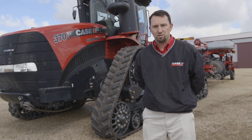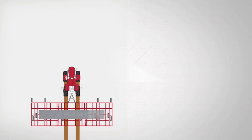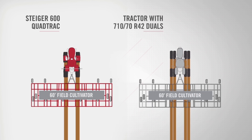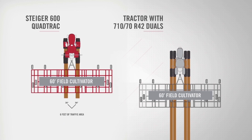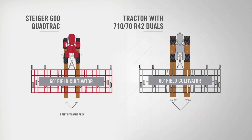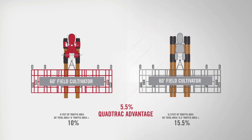We can do this a couple of ways: by eliminating passes across the field with wider equipment, or by using equipment that does more in a single pass. Let's compare the Steiger 600 QuadTrack pulling a 60-foot field cultivator to a wheel tractor with 710-70R42 duals, also pulling a 60-foot field cultivator. The tracked area for the QuadTrack with 36-inch belts equals a total of 6 feet because there are two tracked rows. The traffic area for the wheel tractor is 28 inches per wheel times 4 with duals, equaling 9.3 feet. For each pass, the QuadTrack puts down 6 feet of traffic area, or 10 percent of the working width, compared to 9.3 feet with a wheeled tractor — 15.5 percent of traffic area. That's a 5.5 percent difference, and this doesn't even account for the lower PSI or ground pressure associated with the wider footprint of the QuadTrack versus a wheeled tractor.